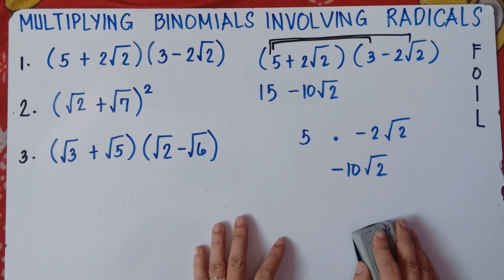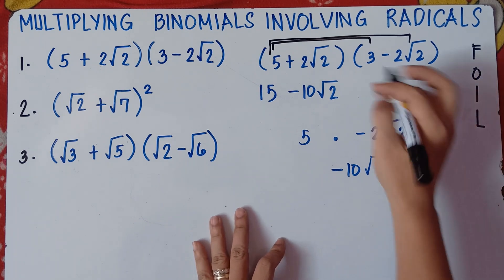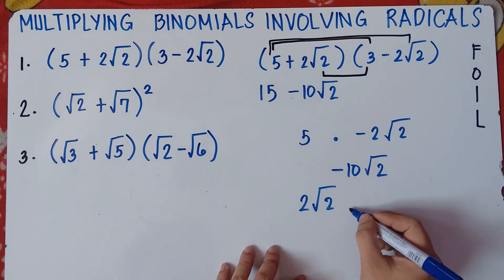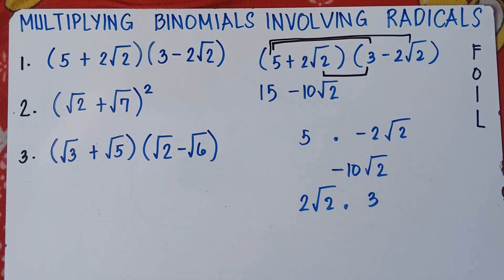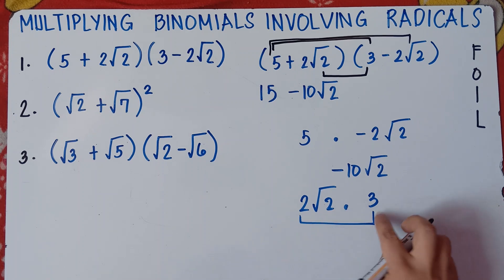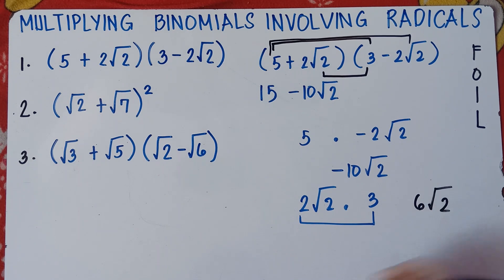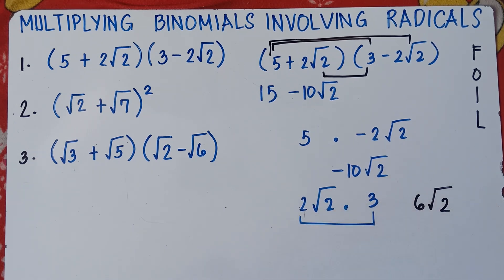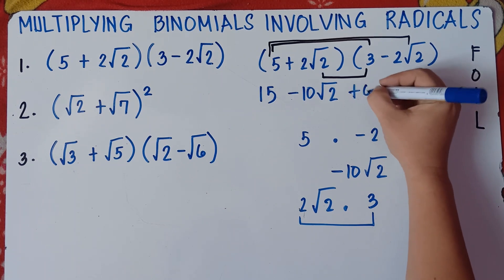We're done with Outer. Next is Inner: positive 2 square root of 2 times 3. Do not multiply 3 and the square root inside — it should be 3 times the number outside the square root. So 3 times 2 is 6. Simply copy square root of 2. Note: if there's no number outside the radical symbol, understood that there's 1 there. So this gives positive 6 square root of 2.